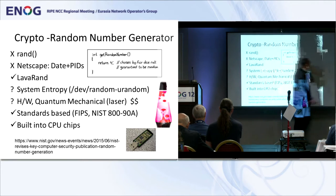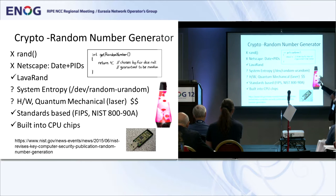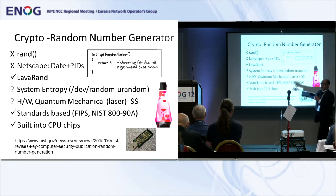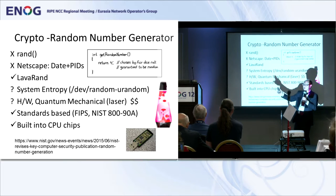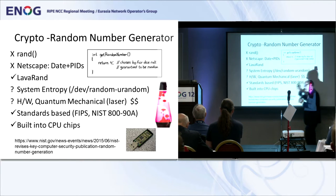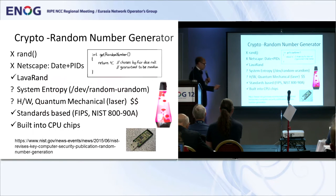Random number generators — we've all heard the problems. This is one of the best random number generators, but no one does this anymore. Back in the 80s someone just put a camera pointing at a lava lamp and it's random — really random. You could go crazy: $10,000 buys you a quantum mechanical laser random number generator. Sometimes it's built into CPU chips, but there are some suspicions about that. There are standards as well, and sometimes standards are necessary to convince your boss you've done things correctly.